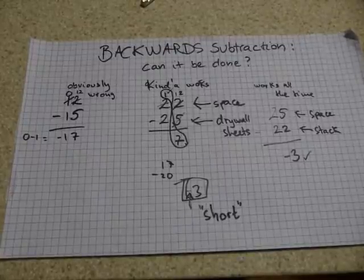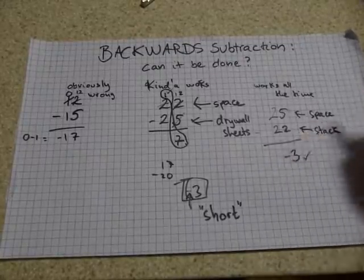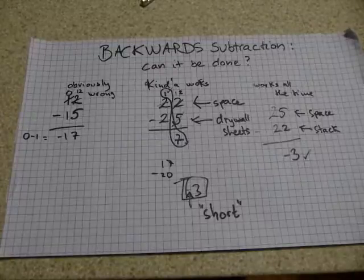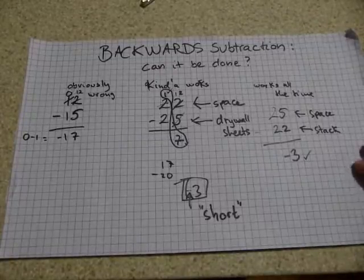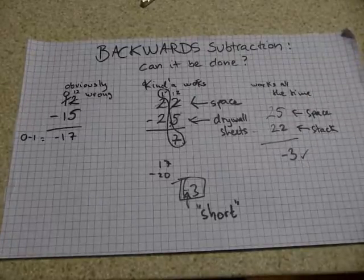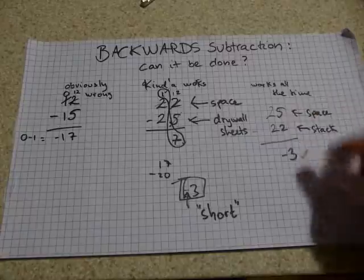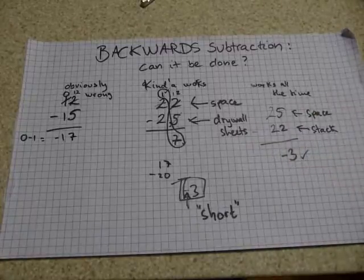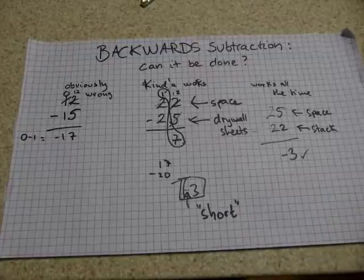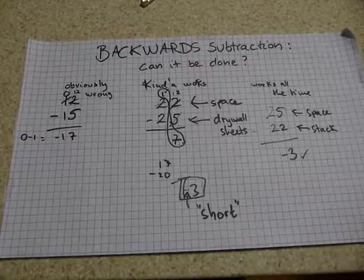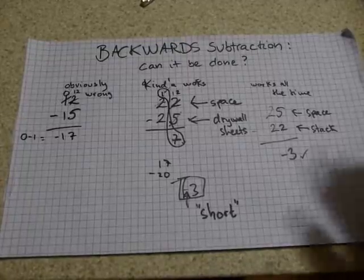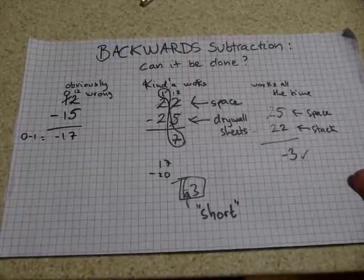That's how backward subtraction is really done — whether you're calculating with feet, inches, and fractions of an inch, or whole numbers, it doesn't matter; it's the same thing. The bottom line: flip the amounts in your head, remember that you flipped them, and the answer will represent something you are short of — that's the only solution that works all the time.